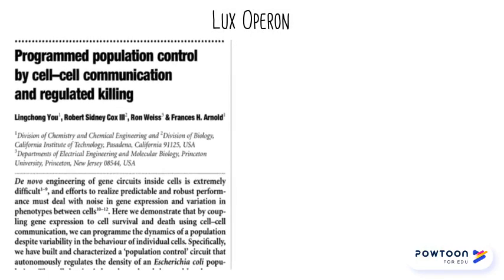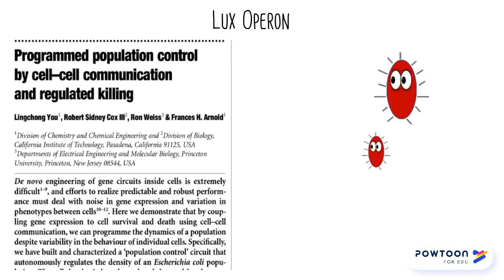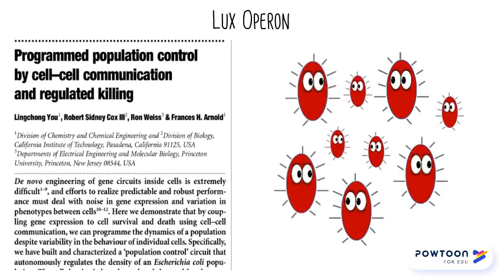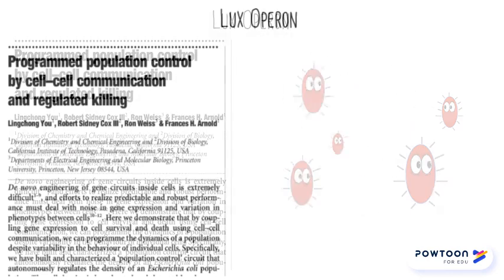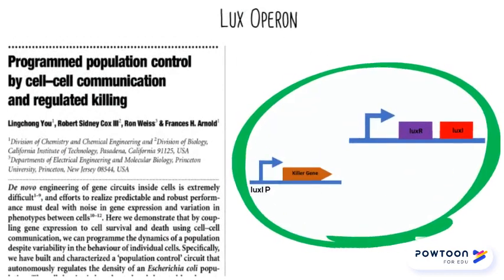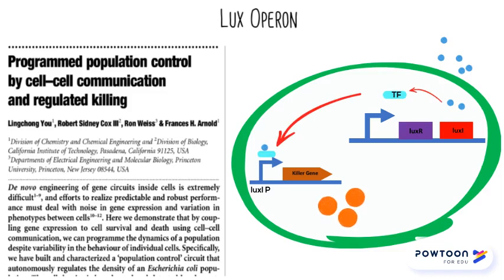Together, these genes can regulate the LUX operon and can be incorporated into other genetic circuits to create a novel signaling pathway in a specific organism. This was demonstrated in a study by You and colleagues in 2004. They engineered E. coli cells using this type of communication module to express cellular death when reaching a cell density threshold. The experimental results demonstrated that by adding the killer gene downstream from the LUX-I promoter, the quorum sensing circuit can control the expression of killer protein concentrations to initiate cellular death.